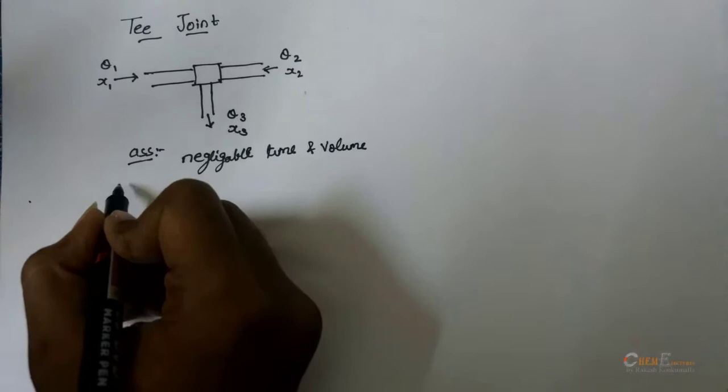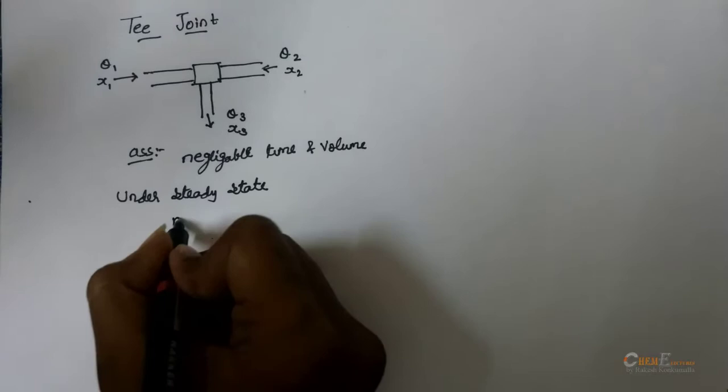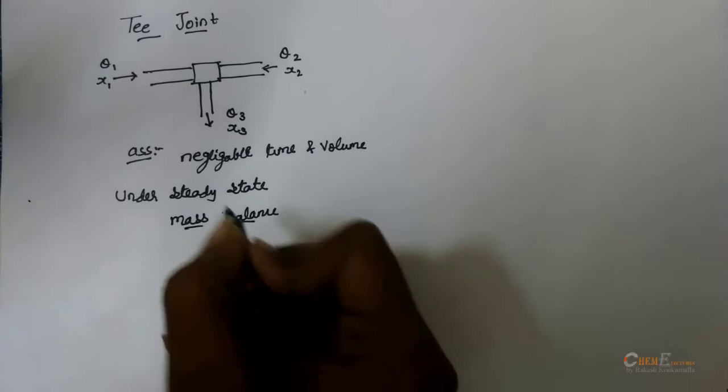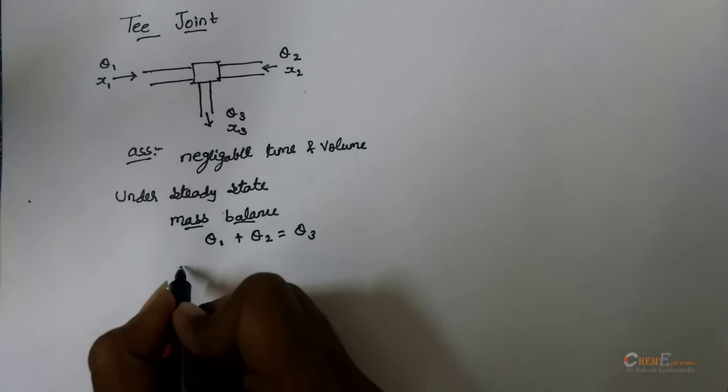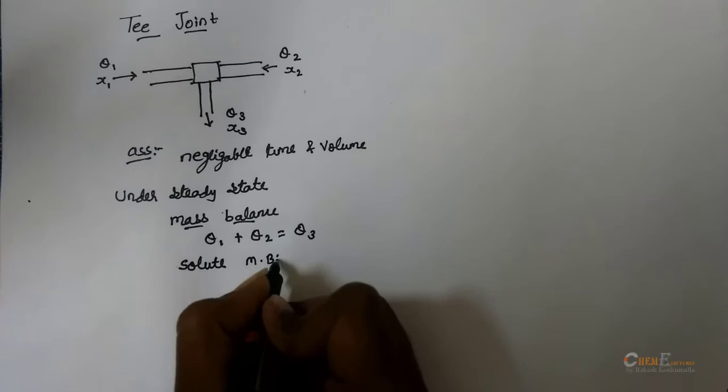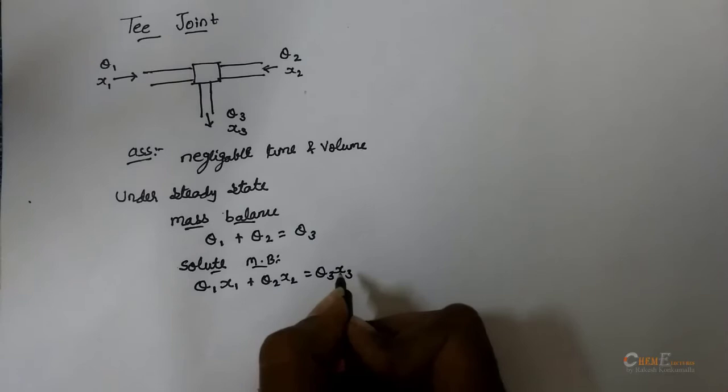Now, under steady-state condition, the overall mass balance will be Q1 plus Q2 is equal to Q3. Solute mass balance will be Q1X1, which is a solute concentration, plus Q2X2 is equal to Q3X3. So, these are the model equations for steady state.